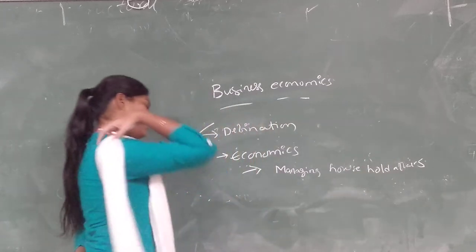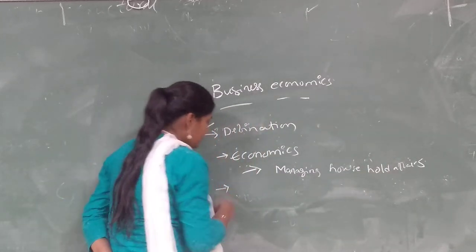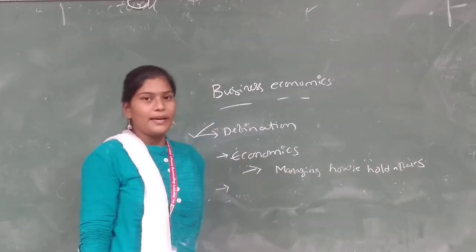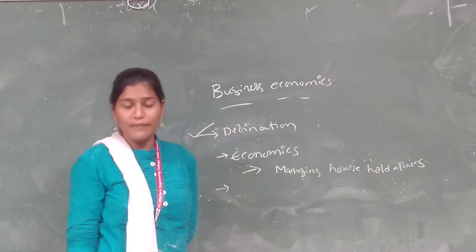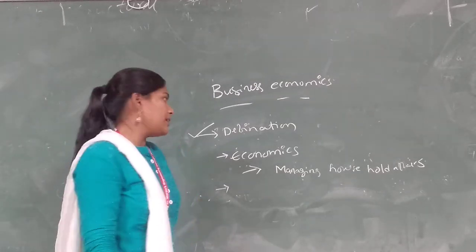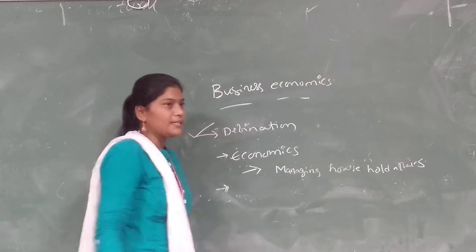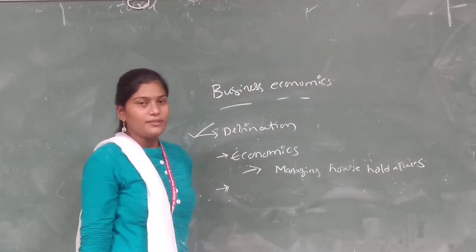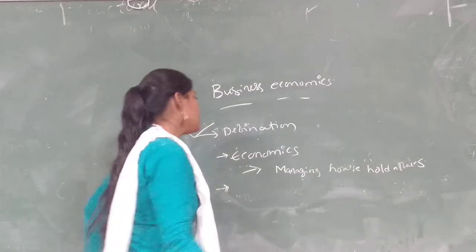From this, we can derive a definition. If a person has a particular salary, they may have limited resources, but they and their family may have unlimited wants. Economics explains how a person allocates their limited resources in order to fulfill their and their family's unlimited wants.